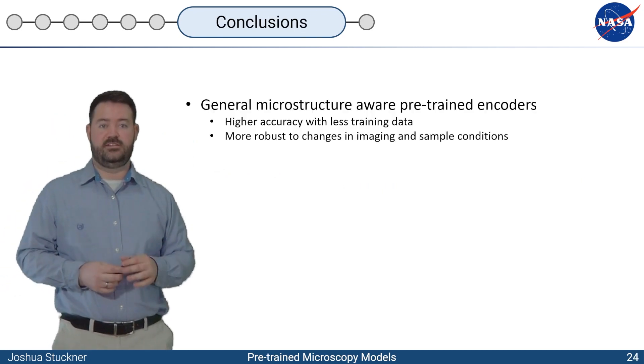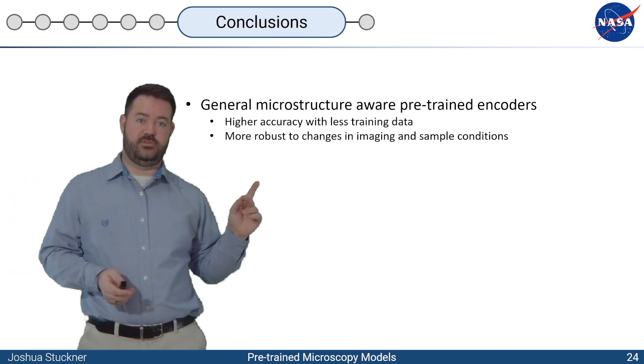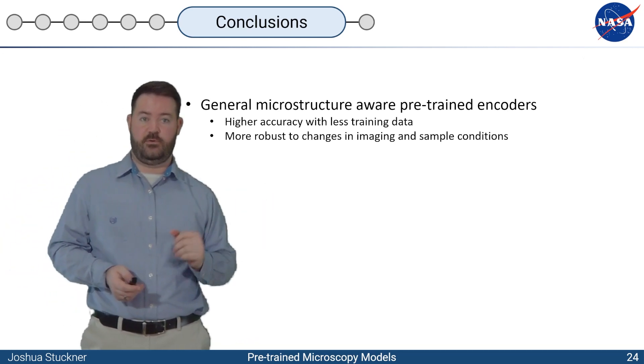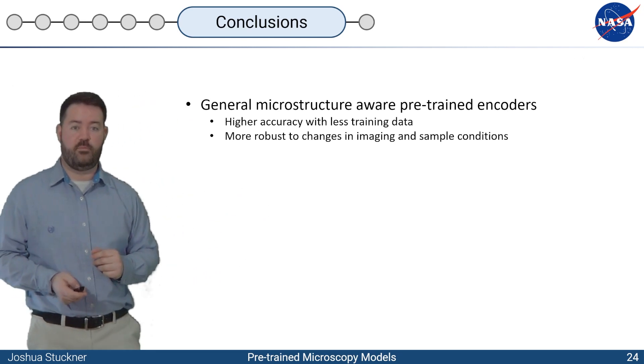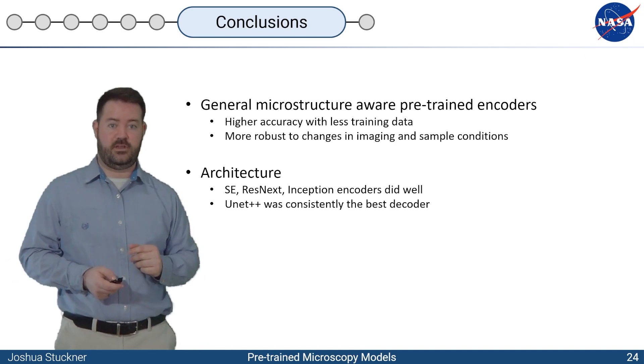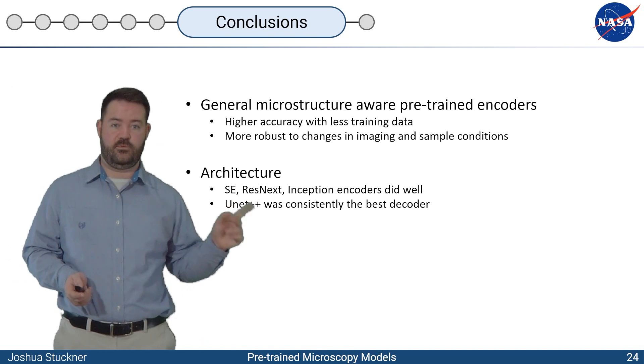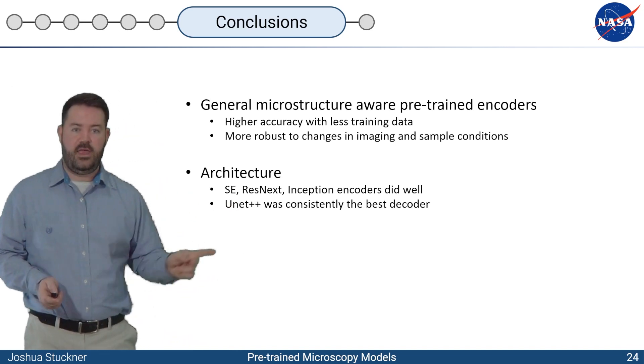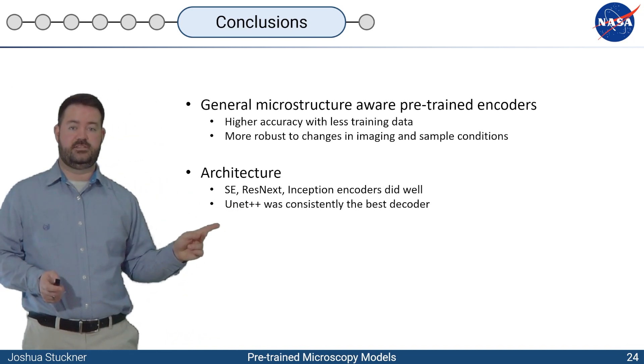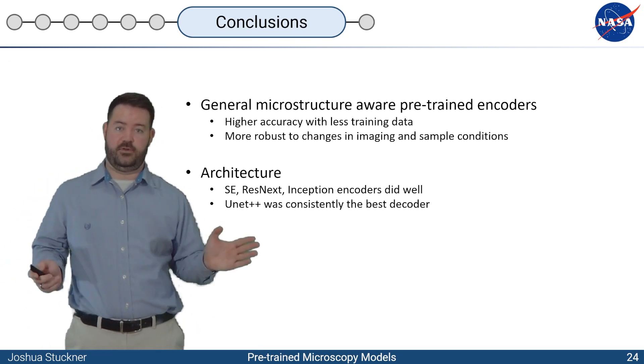We've created a general microstructure-aware pre-training encoder that is able to produce higher accuracy on segmentation data with less training data. It's more robust to changes in imaging and sample conditions. We've tested several different architectures, encoder architectures. The newer ones end up working better, such as Squeeze and Excite, Resnext, Inceptions. And U-Net++ was consistently the best decoder. But our code actually makes it super easy to test all the different encoders that you want.